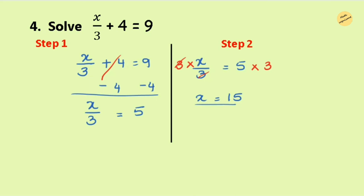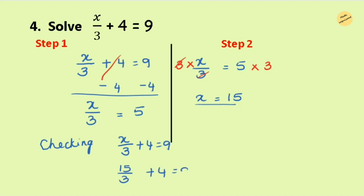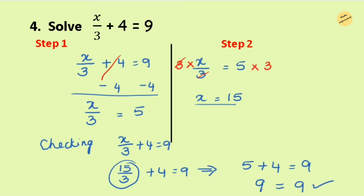So x equals 15. Let's verify: substitute x equals 15 into the equation. 15 over 3 plus 4 equals 9. Simplify 15 divided by 3, which gives 5. Then 5 plus 4 equals 9 on the left-hand side, which equals 9 on the right-hand side. So the value of x equals 15 is true.